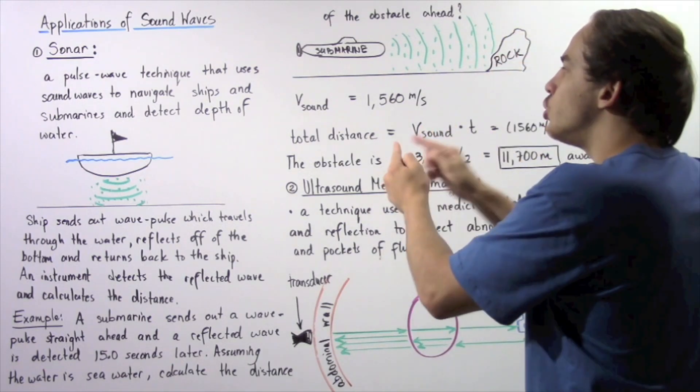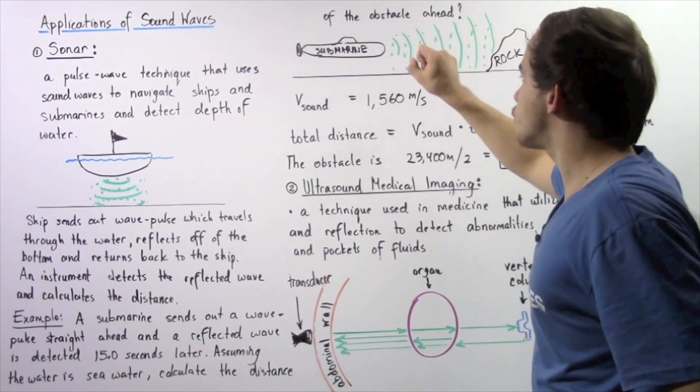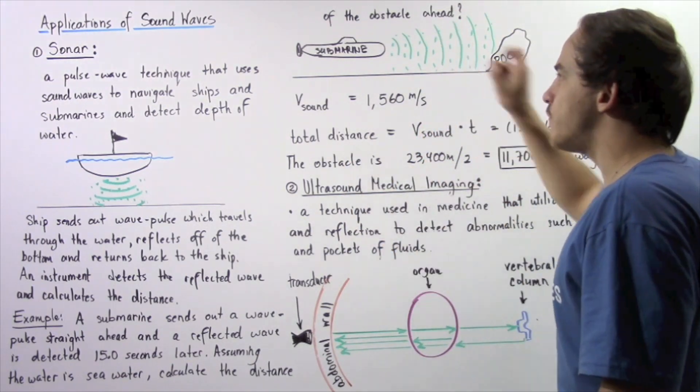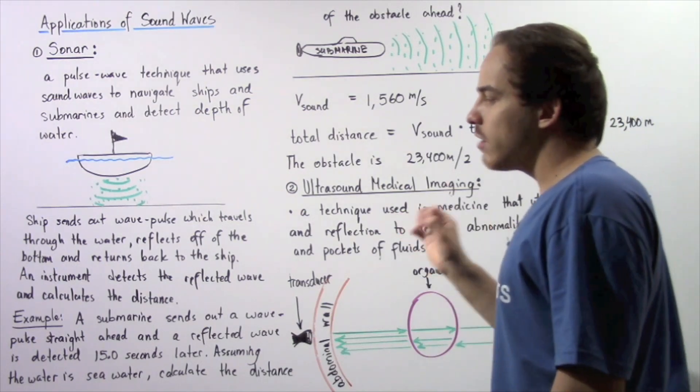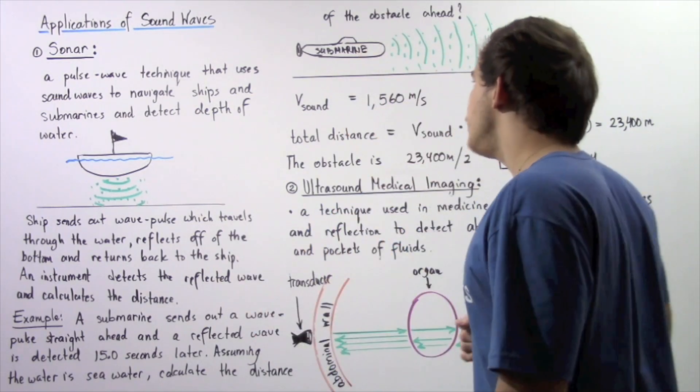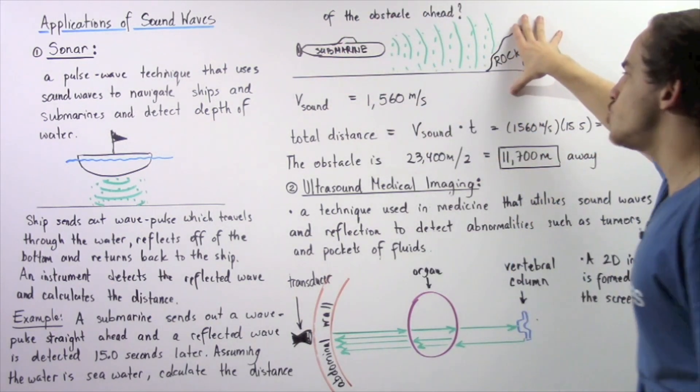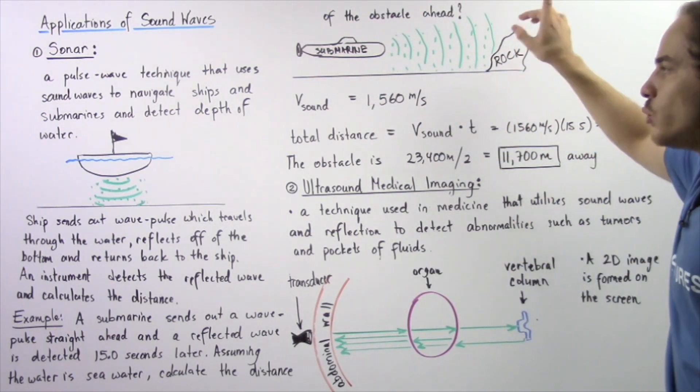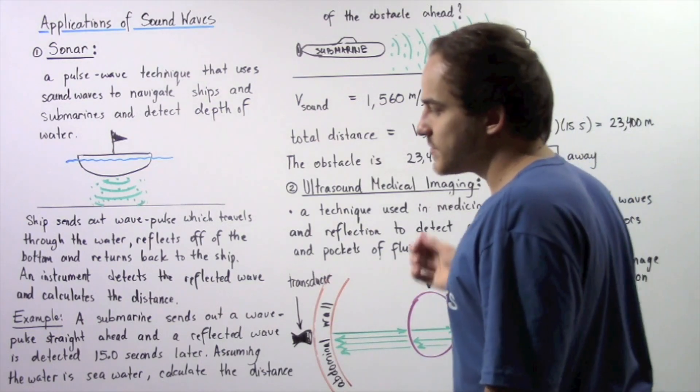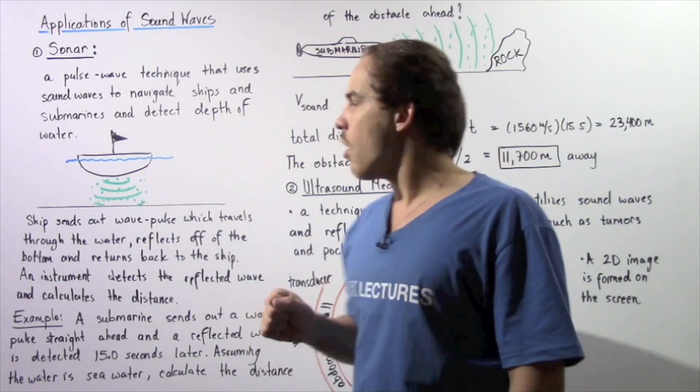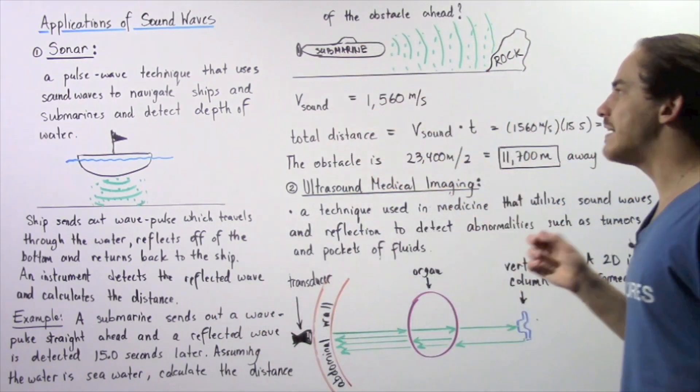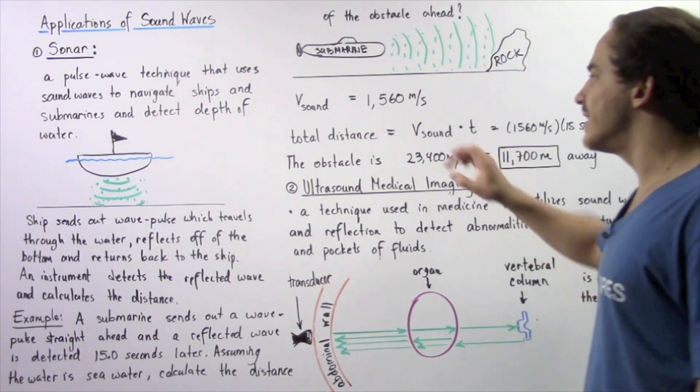If we know how long it takes our wave to travel there and back, and if we know the velocity of the sound wave within the medium, we can use that to calculate the distance from the submarine to our obstacle. We know that the velocity of sound inside seawater is 1560 meters per second.